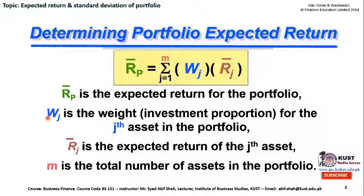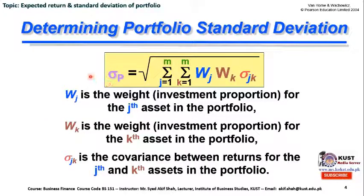This is the formula to calculate portfolio expected return, which we covered in lecture 22. I recommend reviewing that lecture for full detail. The expected return of the portfolio equals the summation from j equals 1 up to m of the weighted average of the expected return of each relevant security.